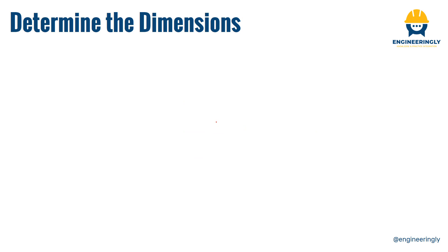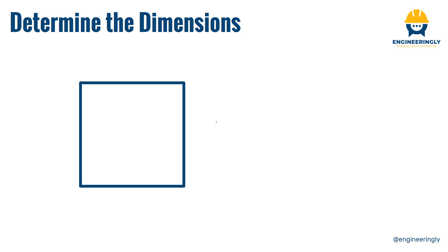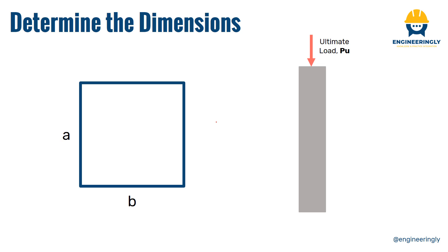The next step is to determine the dimensions of the column. Since it is a square column, both dimensions are the same. The cross-sectional area is directly proportional to the ultimate load and inversely related to the compressive strength of the concrete. The higher the load, the more cross-sectional area is required. Increasing the compressive strength reduces the required area, while decreasing it increases the required area.